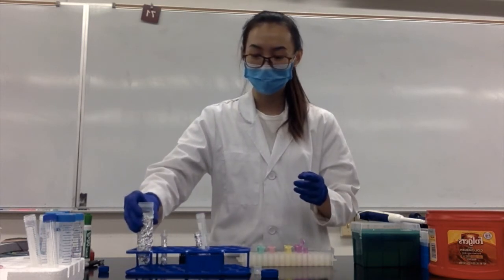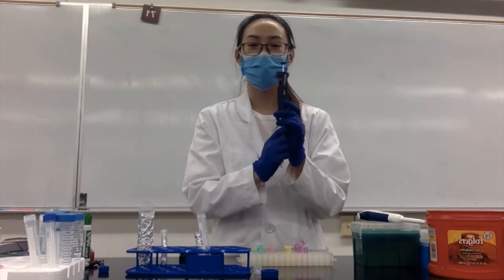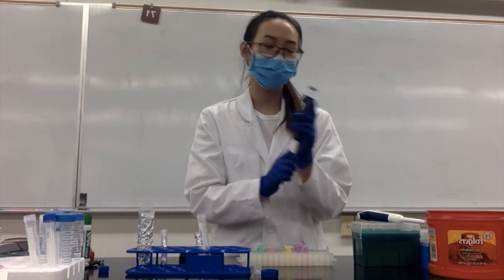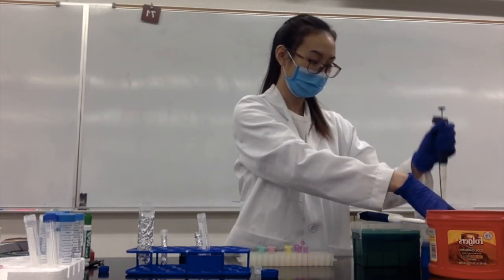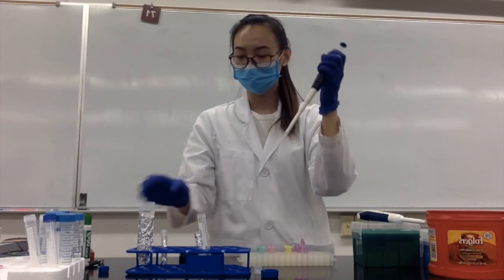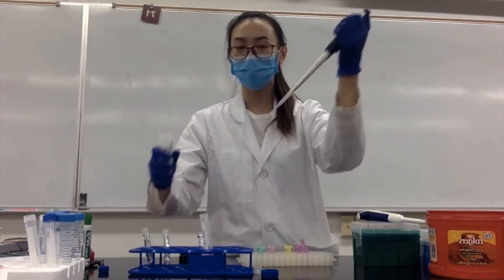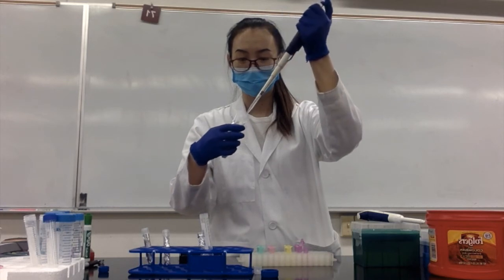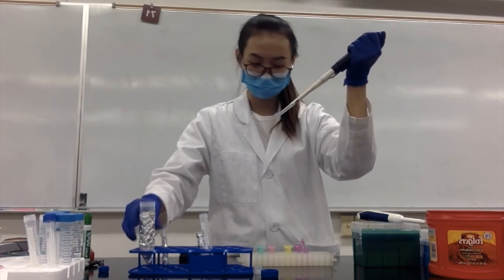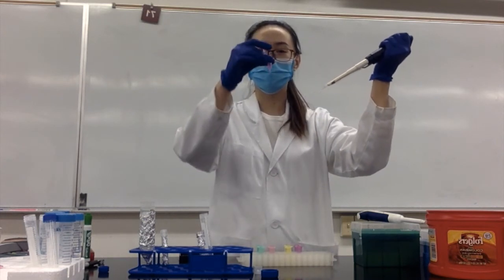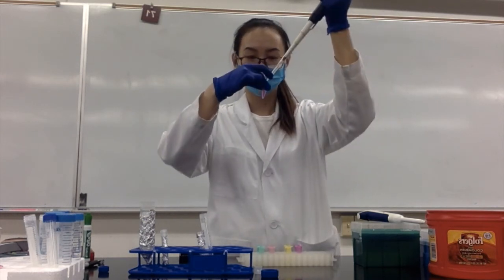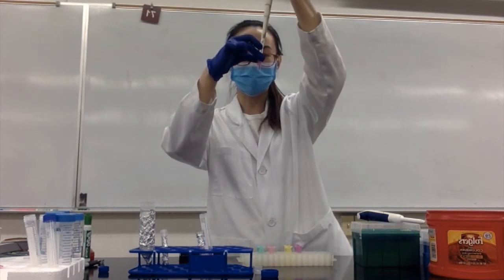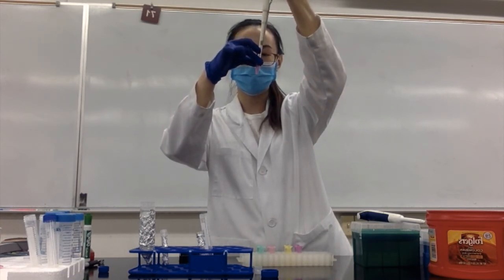Next, find another micropipette and set it to 1,000 microliters and get your tip. Then transfer 1,000 microliters of your DHE working solution to the cell tube, and pipette up and down 10 times.